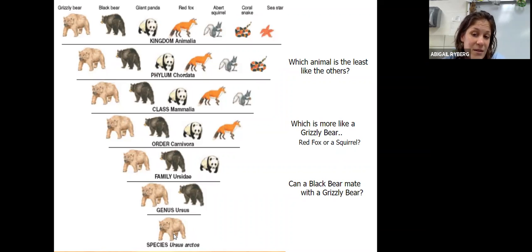Which is more like a grizzly bear? Now let's go all the way down to the bottom. Here's a grizzly bear and we want to know if it's the red fox or a squirrel. Well, if we go up here, here's the squirrel. At this point the squirrel got kicked off, but the fox continued to Order Carnivora. So in that case, we would say that the grizzly bear and the red fox are more closely related. Can a black bear mate with the grizzly bear? No, right. They have to be the same species in order to mate and have fertile offspring.